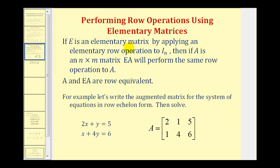If E is an elementary matrix formed by applying one elementary row operation to an identity matrix I, and A is an n by m matrix, then E times A will perform the same row operation to matrix A. Whatever row operation we use to form the elementary matrix, E times A will perform that same row operation to matrix A. It is also true that A and E times A are row equivalent matrices.